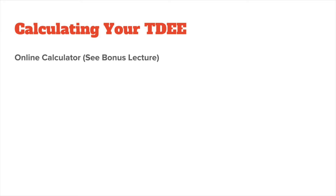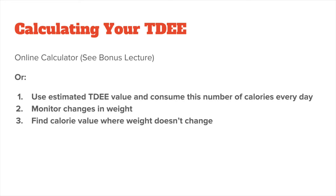If this is not exact enough for you, or you feel the value you got from the online calculator is a little off, you want to do the following. Use the estimated TDEE value and consume around this number of calories every day. Next, weigh yourself twice a week and monitor changes in your weight. If you are losing weight, the estimated TDEE value was too low and you should increase it by around 100 calories. If you are gaining weight, the estimated TDEE value was too high and you should decrease it by 100 calories. Continue this strategy until your weight stagnates, which is the point where you have found your true TDEE.